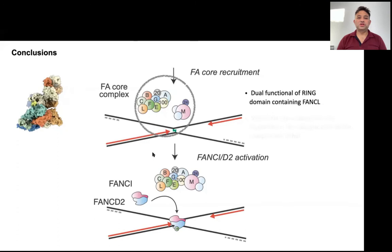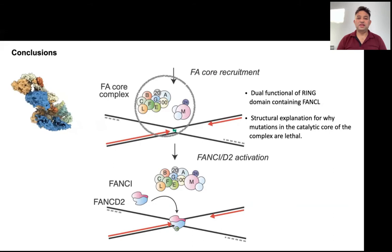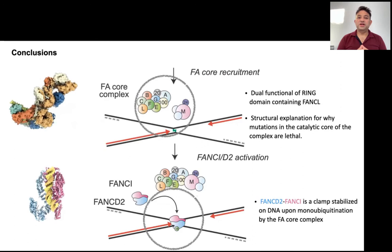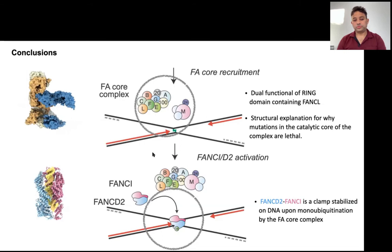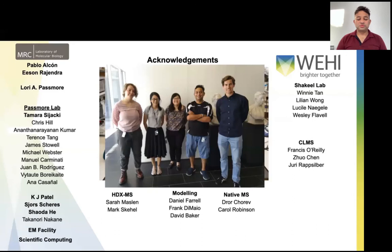To wrap up today, I have shown you some of the structures we determined to understand the key steps of the Fanconi anemia pathway. The structure of the FA core complex revealed functional asymmetry of the ring domain-containing FANCL, and why mutations in the catalytic core of this complex are so lethal. From the ubiquitinated D2-I structure, we learned that D2-I clamps onto DNA once it is ubiquitinated. I would like to thank Laurie Passmore for being such an awesome PI and giving me so much freedom on these projects, and also the rest of the Passmore group, especially Eason and Pablo for this wonderful teamwork, and also Tamara who is carrying this work forward. Thank you to all our collaborators without whom this work would not have been possible. I would also like to thank my small team at the Walter and Eliza Hall Institute who are looking at gene regulation through the lens of epigenetics and building some cool CryoEM sample preparation devices. Thank you all for listening, and I'm happy to take some questions.